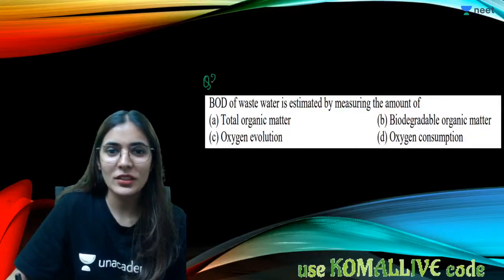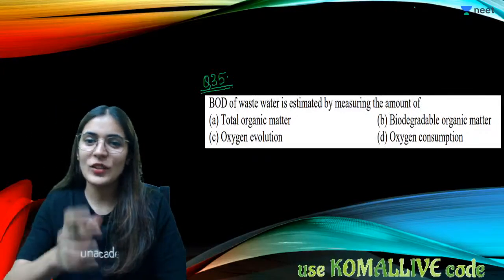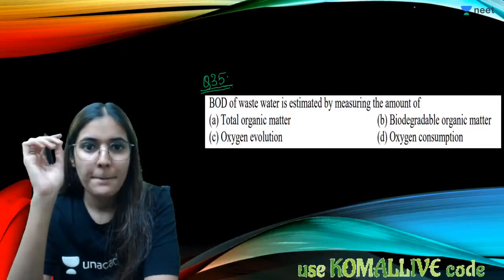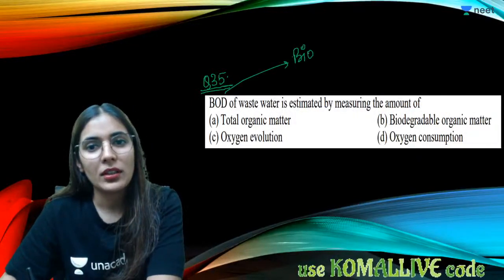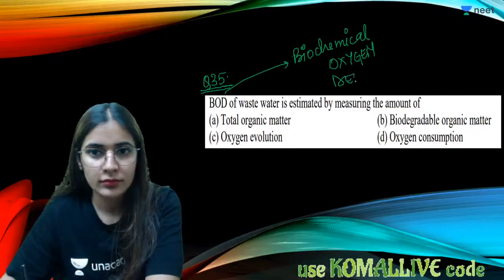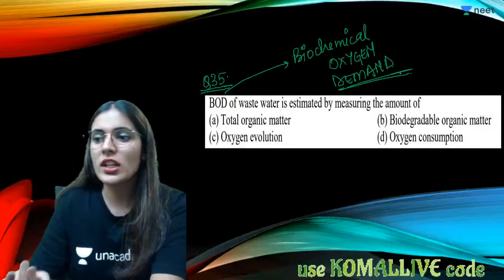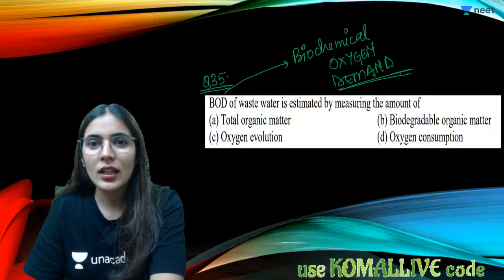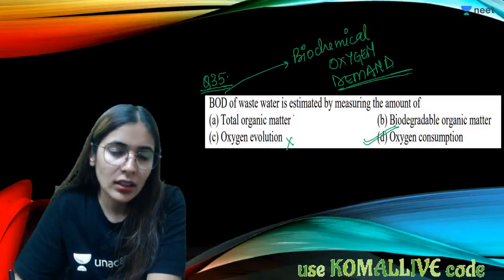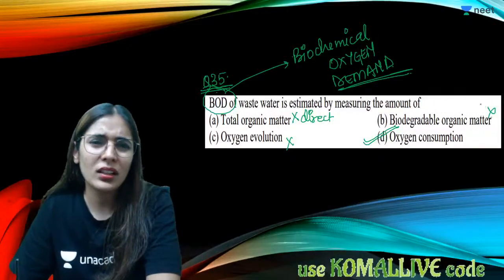Question thirty-five: BOD — biological oxygen demand — of wastewater is estimated by measuring the amount of oxygen consumed (demand), not released. It indirectly tells us the amount of degradable organic matter present. Greater BOD means more polluting potential. The answer involves measuring oxygen consumption by degradable organic matter.